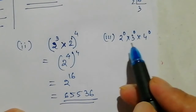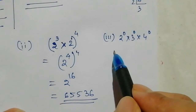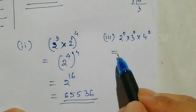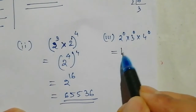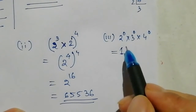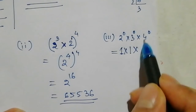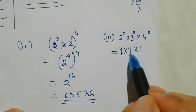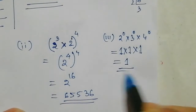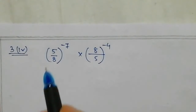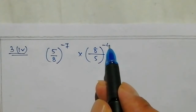Question number 3. 2 to the power is 0. 1 to the power is 1. 3 to the power is 0. 4 to the power is 0. 1 to the power is 1. Question number 3: 5 to the power is 4. 5 by 8 to the power is 7. 8 by 5 to the power is 4.